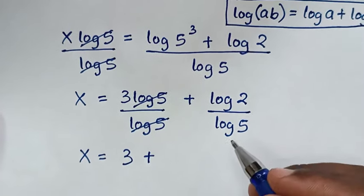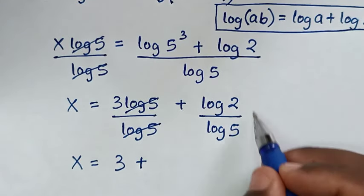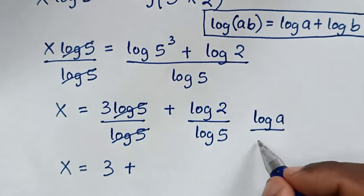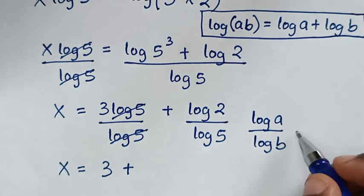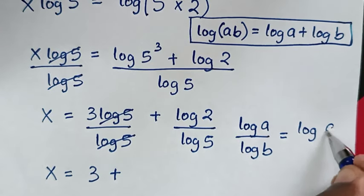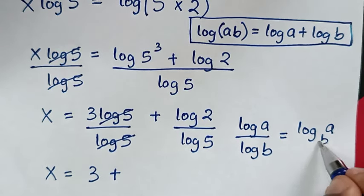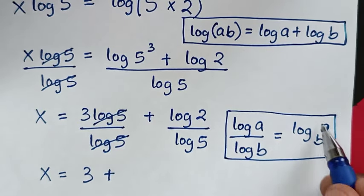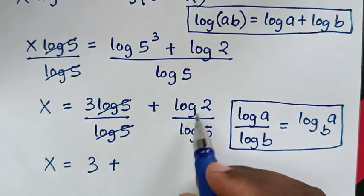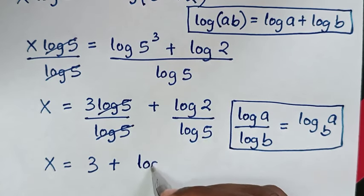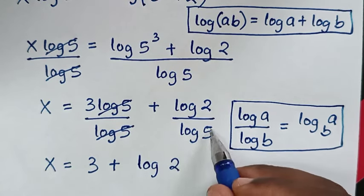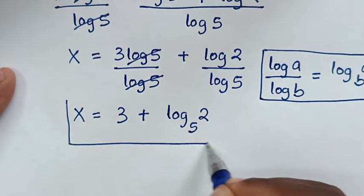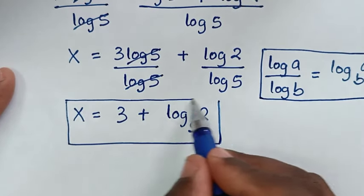Then plus log of 2 over log of 5. This is in the form of log of a over log of b, which equals log of a base b. Applying this rule, it becomes log of 2 base 5. Therefore x equals 3 plus log base 5 of 2. This is the final answer for the value of x in this problem.